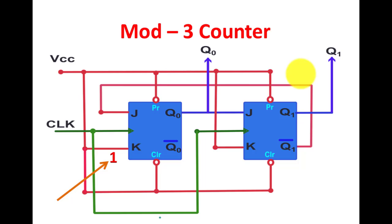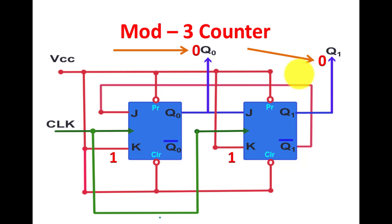The K input is connected to VCC so it is logically 1 for both flip-flops. We assume the initial output at Q1 and Q0 are both zero. Since Q1 is zero, Q1-bar will of course be one. This Q1-bar is fed back to J of the first flip-flop, so J is 1.